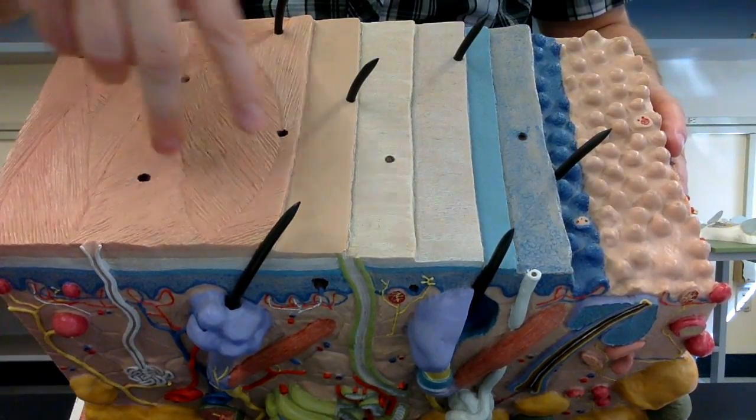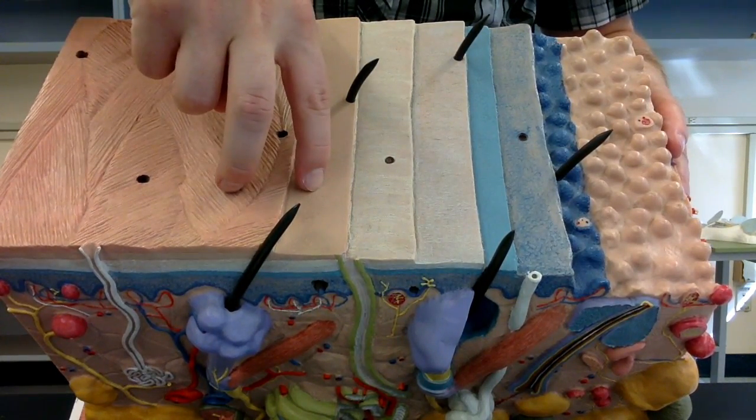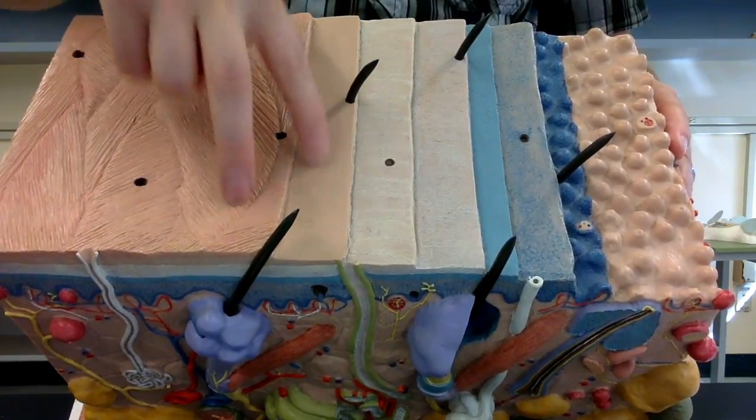So we're going to start right here. These two portions actually represent the top area of the epidermis. So this is the stratum corneum.